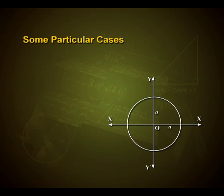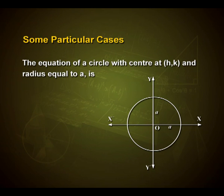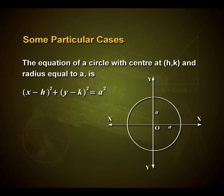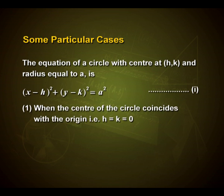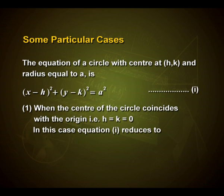Now let us discuss some particular cases. The equation of a circle with center at (h, k) and radius equal to a is (x - h)² + (y - k)² = a². When the center of the circle coincides with the origin, that is h and k are both equal to 0, the equation reduces to x² + y² = a².